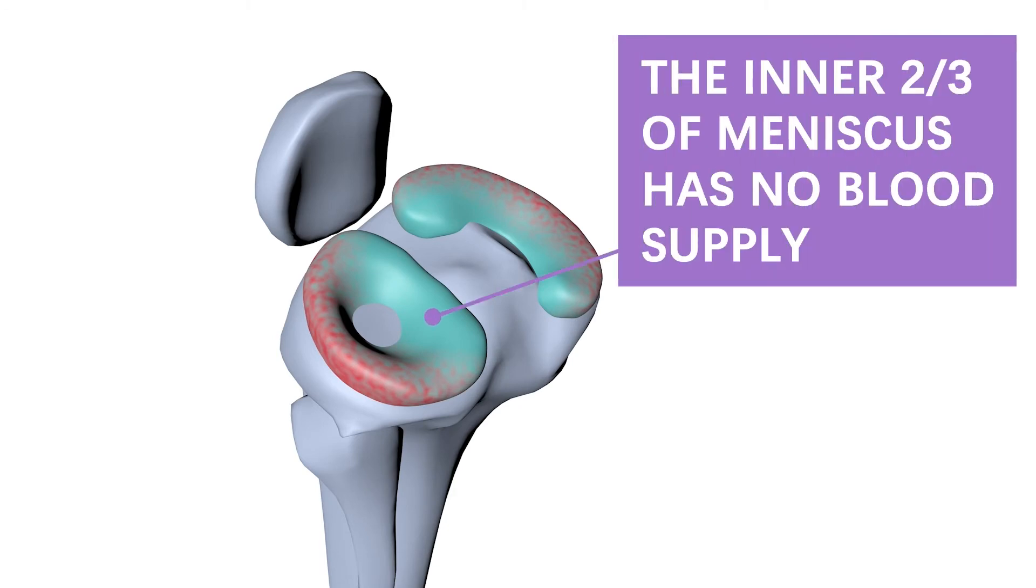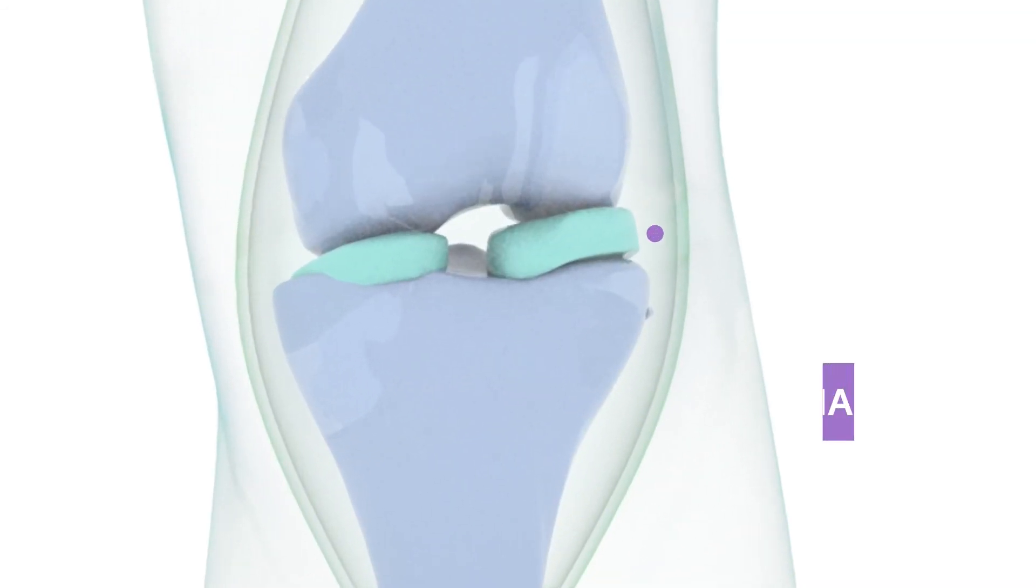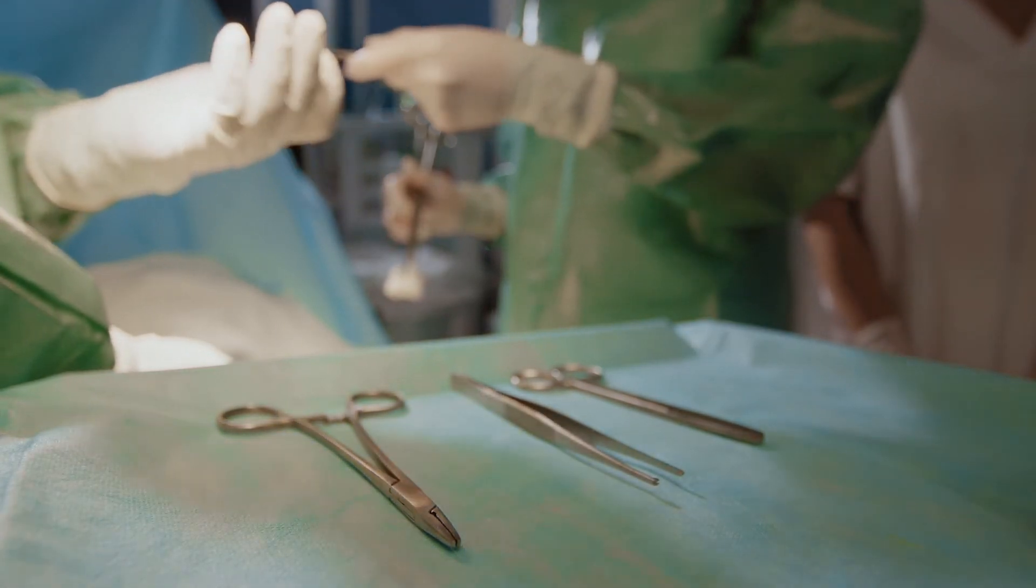The inner two-thirds of the meniscus has no blood supply and can only rely on synovial fluid for nutrition. Therefore, it lacks the self-repairability after injury and must be treated with surgery.